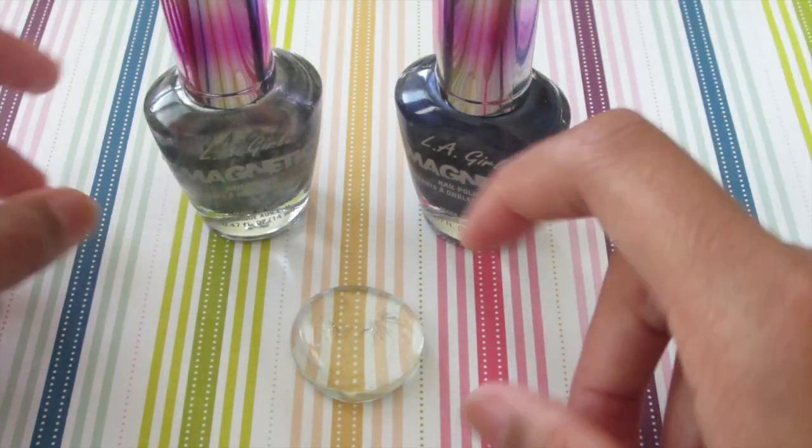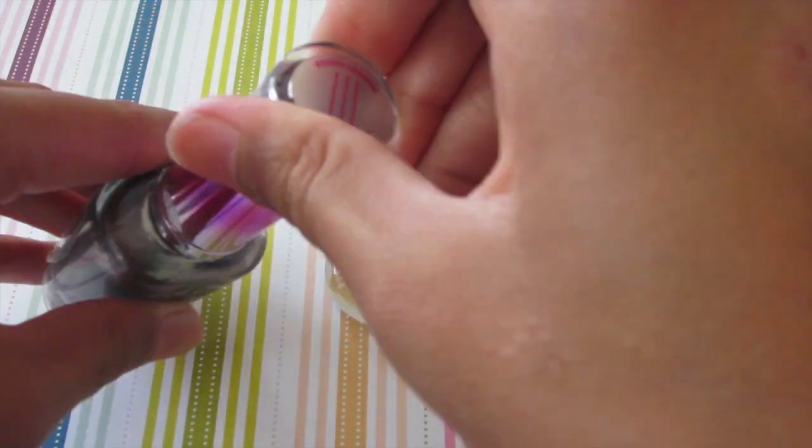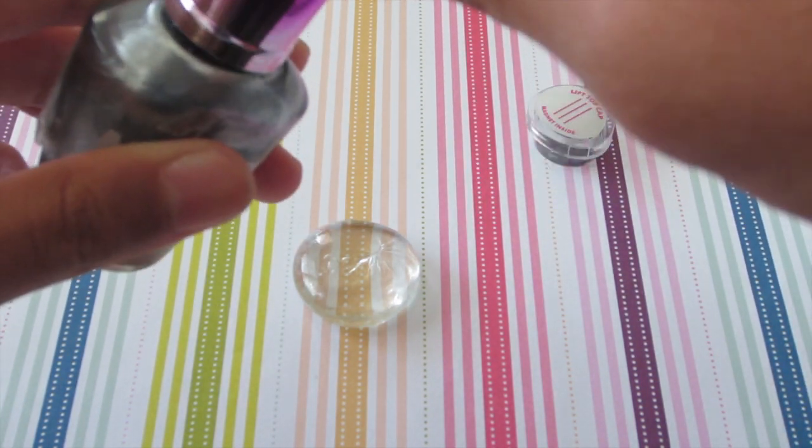So for this tutorial, I'm going to be using this brand by LA Girl and it's called Polar Opposite. I'm going to take out the magnet so it's easier to access when I'm done putting on the coat.